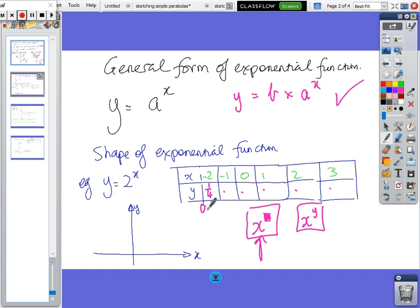So you get a quarter, or your calculator might say 0.25, a half, 1, 2, 4, and then 2 cubed is 8.